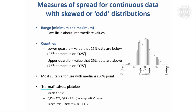For our normal calves, for the platelets measurement, I think we had a mean of about 601. The median's quite close — it's 594. The lower quartile was 478, which is the value below which a quarter of the data lie — another way of describing it: Q1, the 25th percentile. And then the upper quartile was 724, so 25% of the data were above 724.